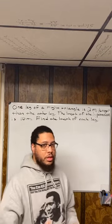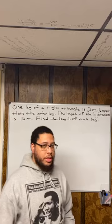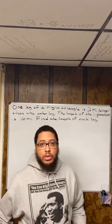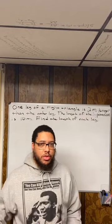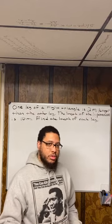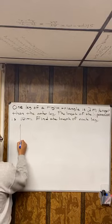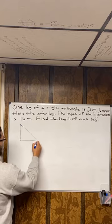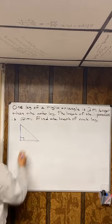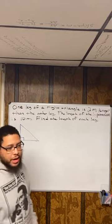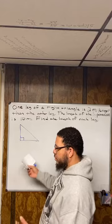A right triangle can't have two 90-degree angles or three. It can only have one because all three angles in any triangle have to add up to 180. So if you had two right angles — and a right angle is 90 degrees — that would be 90 and 90 already, and you wouldn't have any room for a third angle. So that lets you know that in a right triangle you only have one right angle. So let's just draw a right triangle — it doesn't have to be perfect.